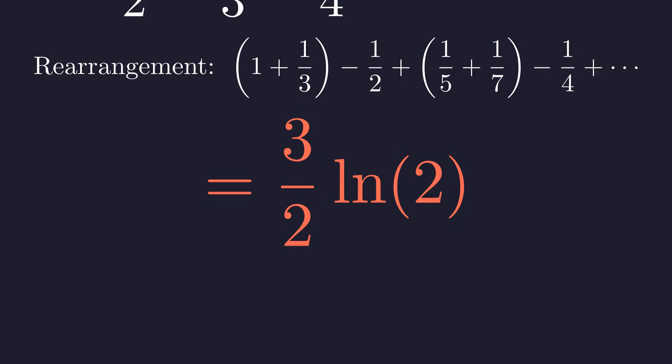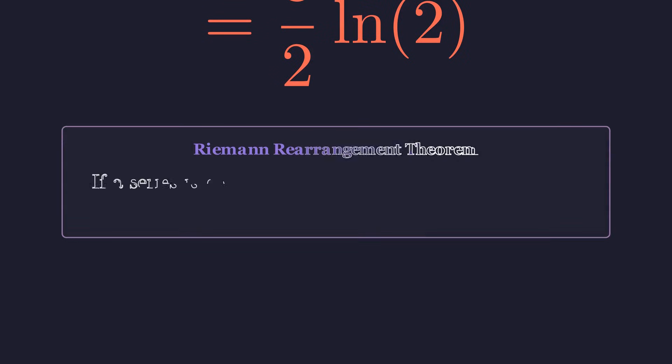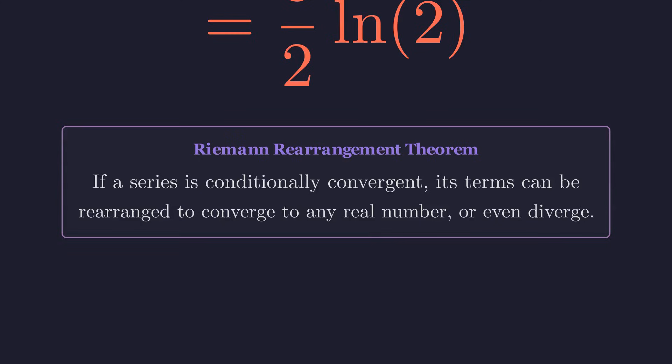This is a consequence of the Riemann rearrangement theorem. For a conditionally convergent series like this one, you can reorder the terms to make it add up to any number you desire.